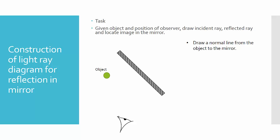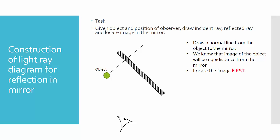So how do we do that? First, draw the normal line from the object to the mirror. We know that the image of the object will always be equidistant from the mirror, so we locate the image first. Take note that the equidistance is measured from the reflecting surface — this distance is the same as this distance. It is not from the back surface, because the reflecting surface is this surface. So this is the image.